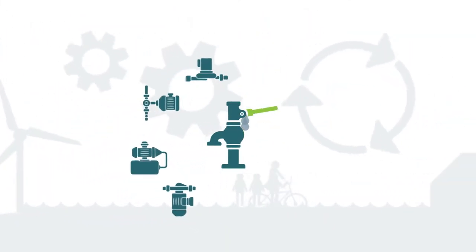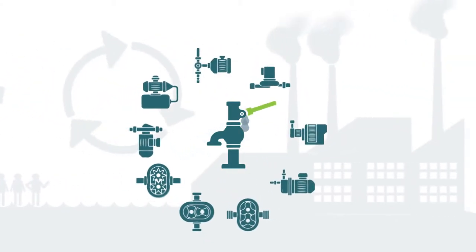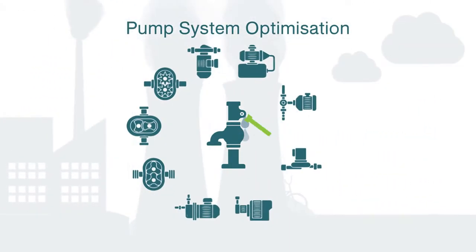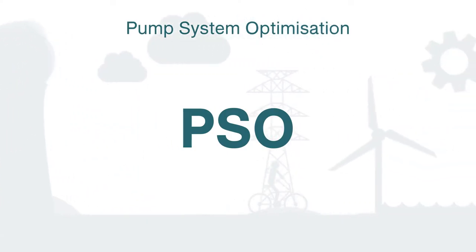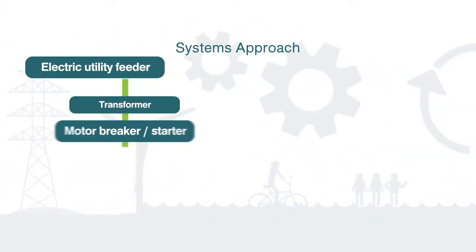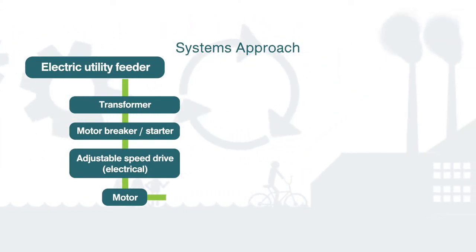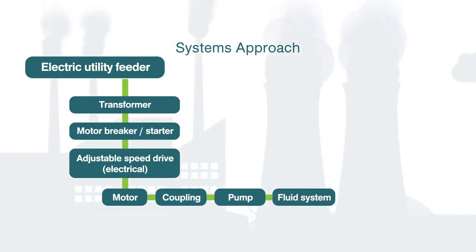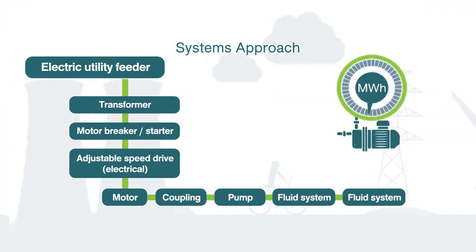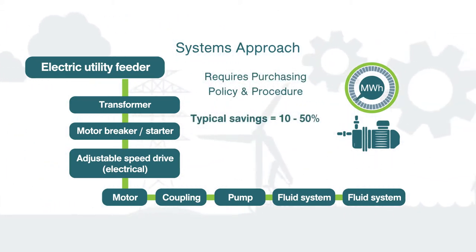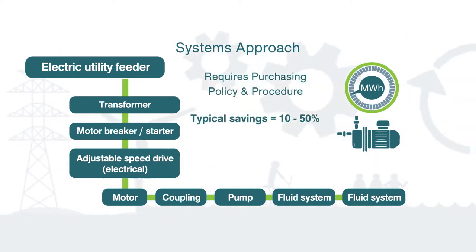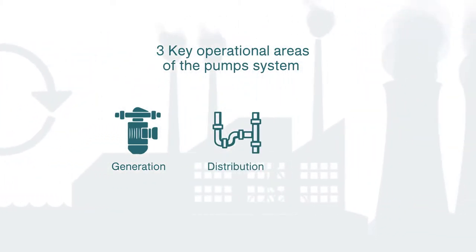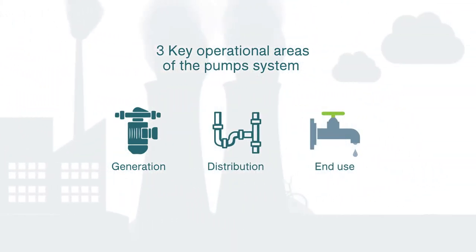Pump systems are widely used in industry and this high-level overview video reviews pump system optimization, also known as PSO. PSO is a systematic approach for evaluating energy usage of pumps to identify energy-saving opportunities in any one or a combination of the three key operational areas of the pump system, namely generation, distribution, or end use of the pumping application.